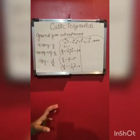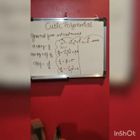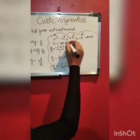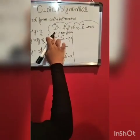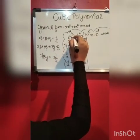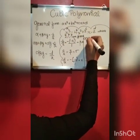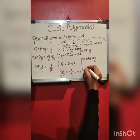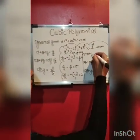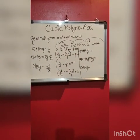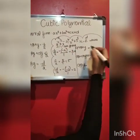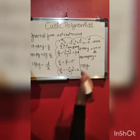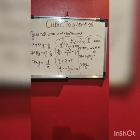Now let us verify that the zeros equal the coefficient values. The zeros are alpha, beta, gamma — which are 2, 1, and 1 respectively. So alpha plus beta plus gamma equals 2 plus 1 plus 1 equals 4. These zeros match the coefficient result of 4.